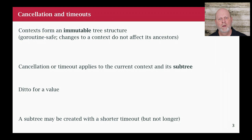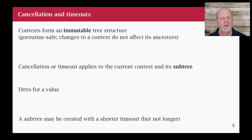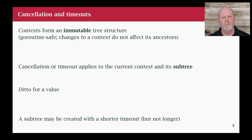We have to think about trees and subtrees. If I have a context that somebody passes into me and I want to add a timeout, I'm going to create a new context that points at the old one. The timeout applies downward - to the context I just created and to any context derived from it. Any new children will point up to my context with the timeout, but the timeout will not apply to anything above me. Think about it this way: I've got an incoming HTTP request, I add a timeout to it, and I start calling other outgoing requests. The timeout applies to me and those calls below me, but not to the HTTP request context above me.